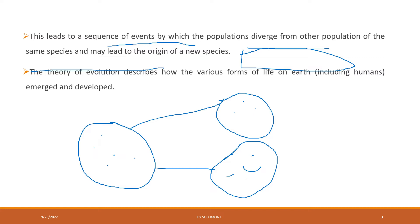The theories of evolution describe how the various forms of life on earth emerged and developed. There are two main points in the theories of evolution: one is how life emerged and originated, and the other is how this life developed. Once life is formed, it must develop. So the theories of evolution describe both the formation of organisms and the development of these organisms.